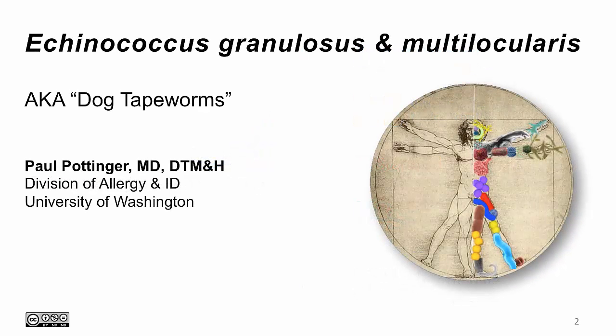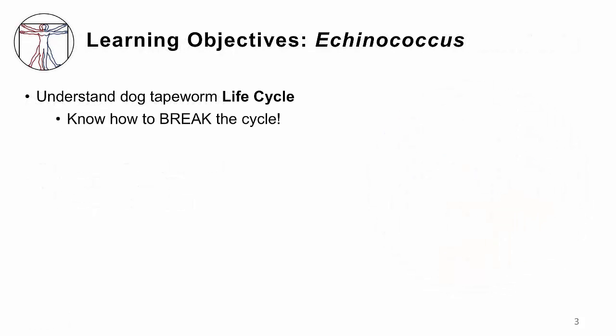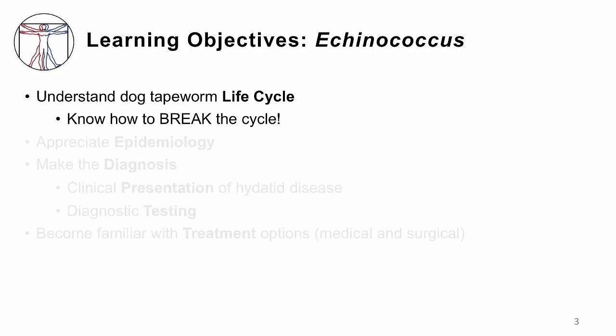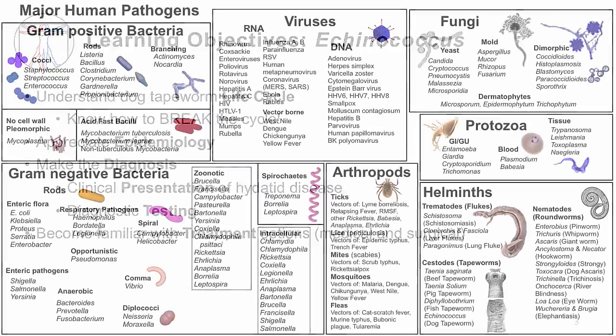This lecture will cover Echinococcus granulosis and multilocularis, the dog tapeworms. I'm Dr. Paul Pottinger. The objectives for Echinococcus are for you to understand the lifecycle of these worms and therefore how to break them, know who gets the infection and why, make a diagnosis, recognize the clinical presentation of hydatid disease, know how to confirm your suspicion, and become familiar with treatment options — in this case both medical and surgical management options.